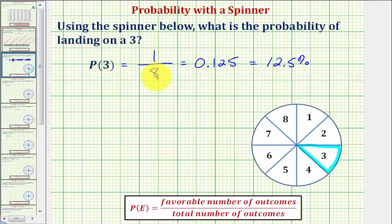Theoretically, having a probability of one eighth means we would expect one out of every eight spins to land on a three.